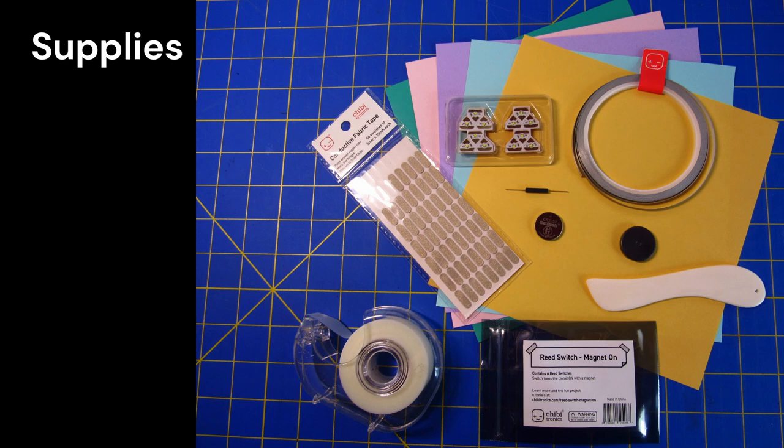You'll need a Chibitronics reed switch, four white LED circuit stickers, some conductive fabric tape and fabric tape patches, a CR2032 disk battery or similar, two pieces of origami paper at least eight inches squared double-sided, a craft magnet, a bone folder, and tape.